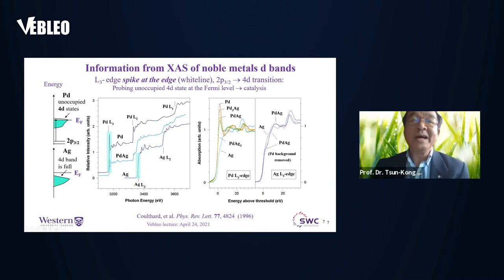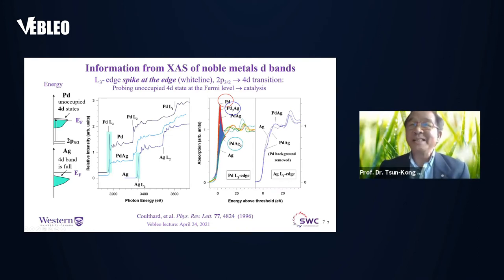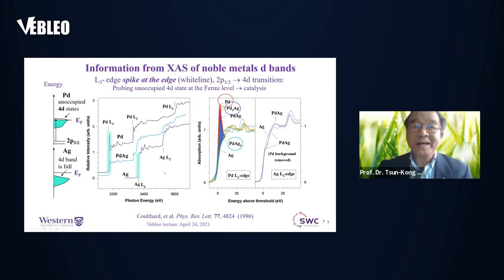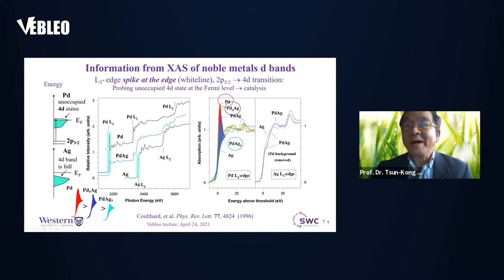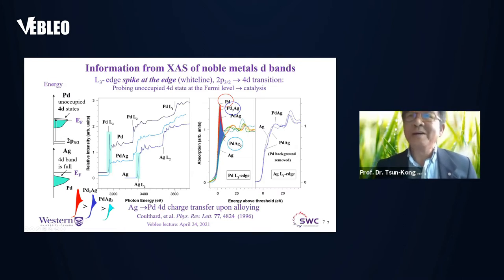This can be applied to alloys. Starting from palladium and diluting it in silver, we observe what happens to the white line. Going from palladium to Pd₃Ag and further dilution, there is a systematic change in the area under the curve. By analyzing this data, it's clear there is silver-to-palladium 4d charge transfer. So X-ray absorption at the edge can tell us something about the density of states at the Fermi level of d-character, which is very important for catalysis.